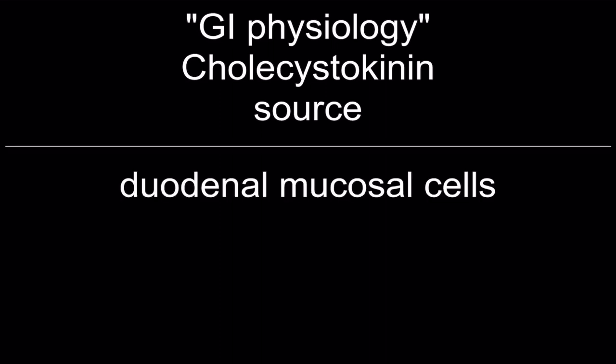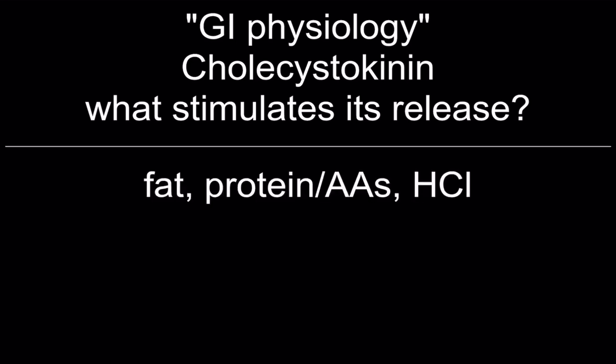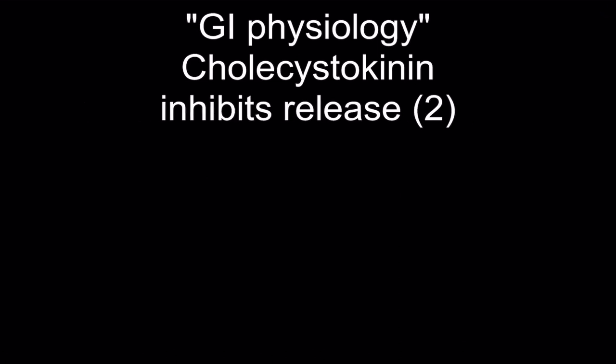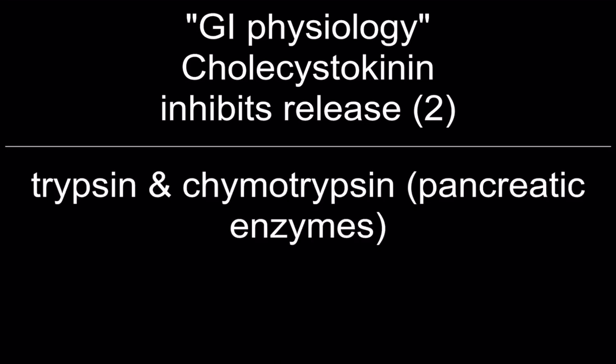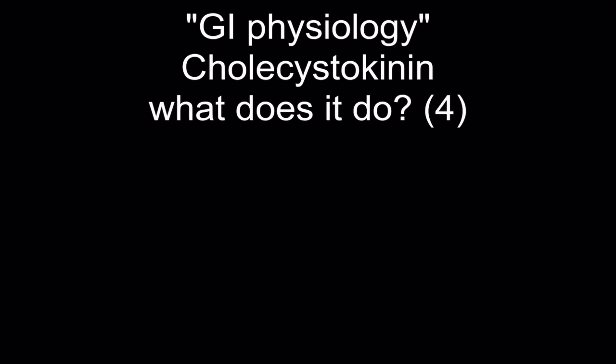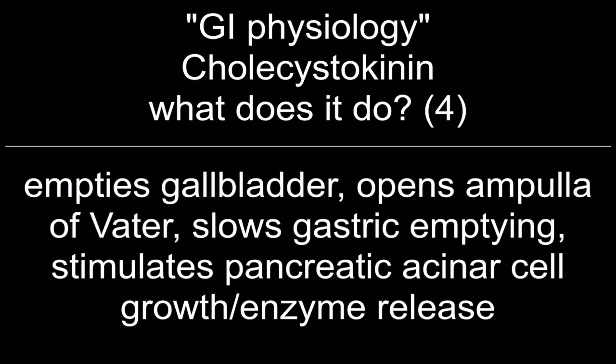Cholecystokinin — source: duodenal mucosal cells. Release stimulated by: fat, protein, amino acids, and hydrochloric acid. Release inhibited by: trypsin and chymotrypsin pancreatic enzymes. Actions (top four): empties the gallbladder, opens the ampulla of Vater, slows gastric emptying, and stimulates pancreatic acinar cell growth with enzyme release.